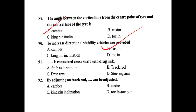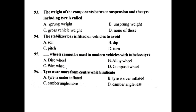Dash connects the cross shaft with the drag link — it is the drop arm. By adjusting the track rod, toe-in and toe-out can be adjusted.